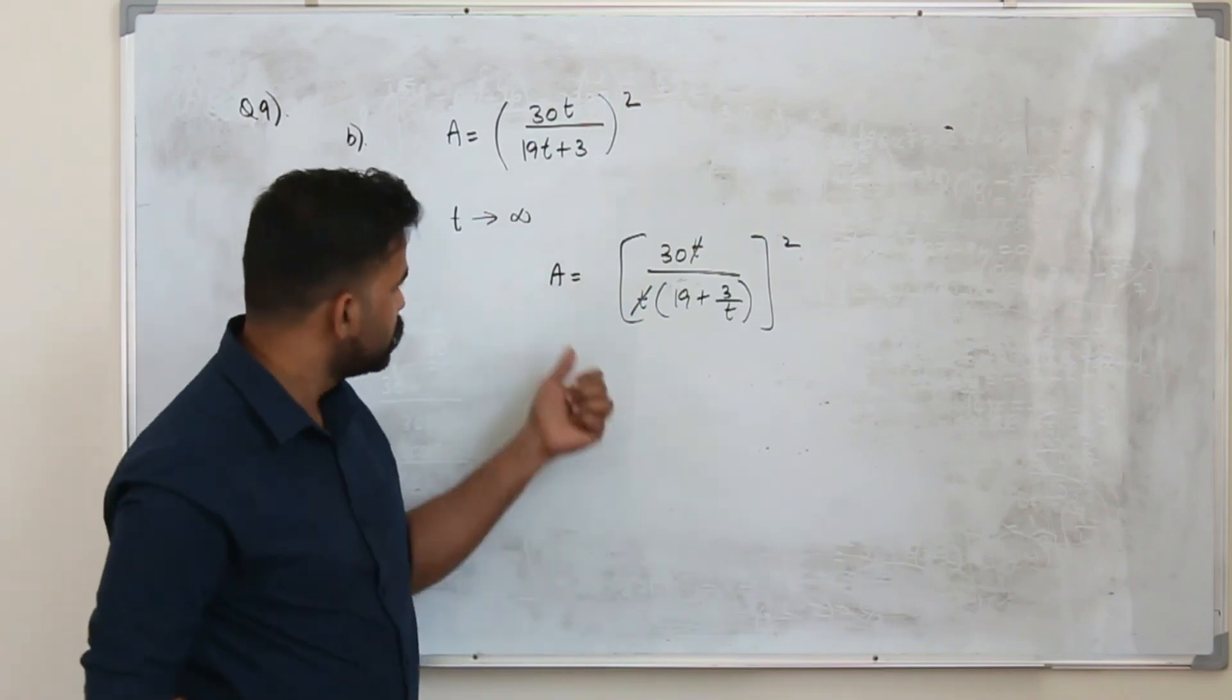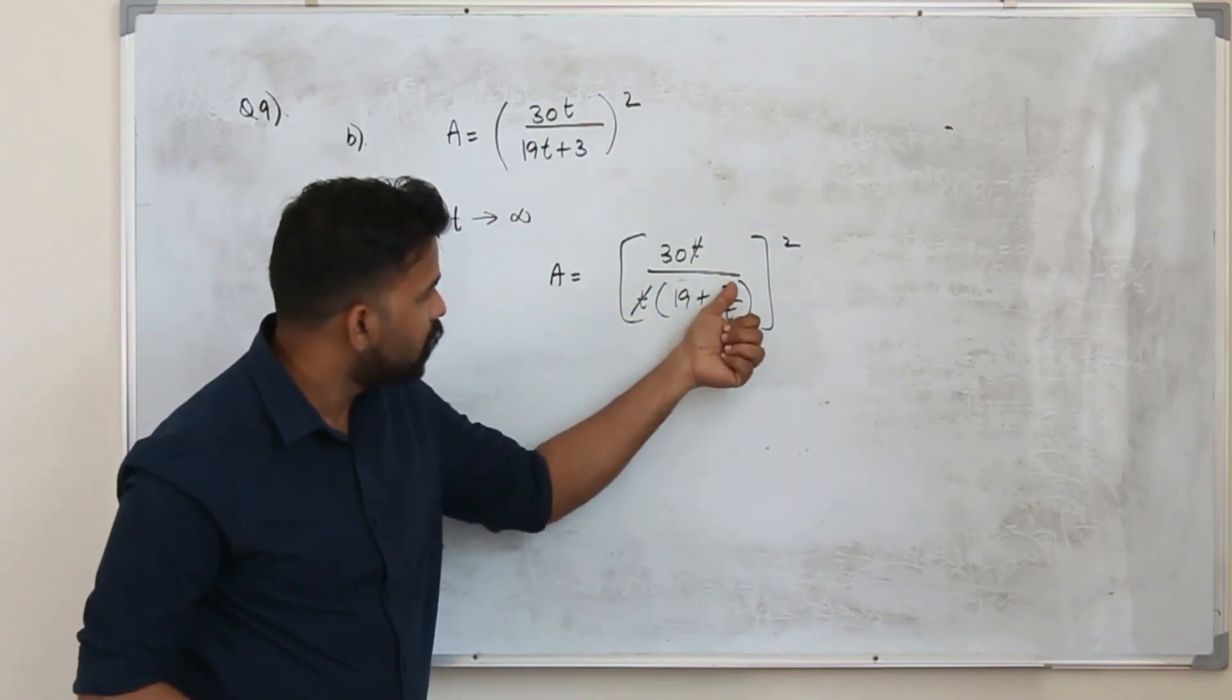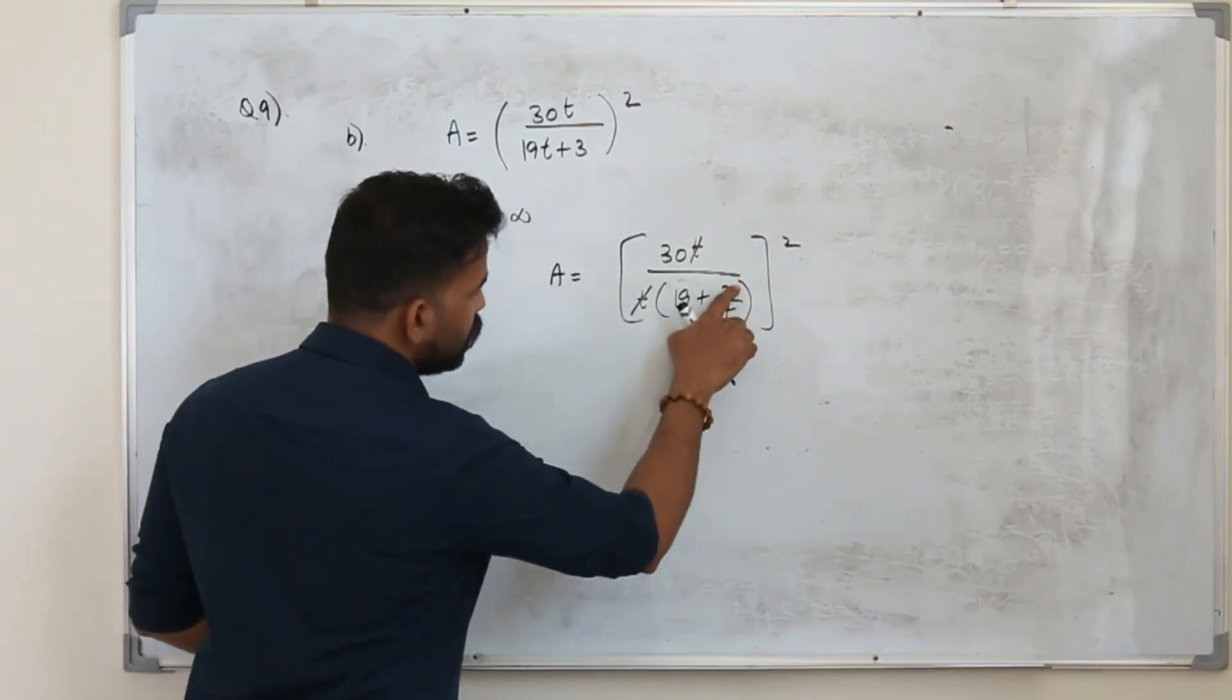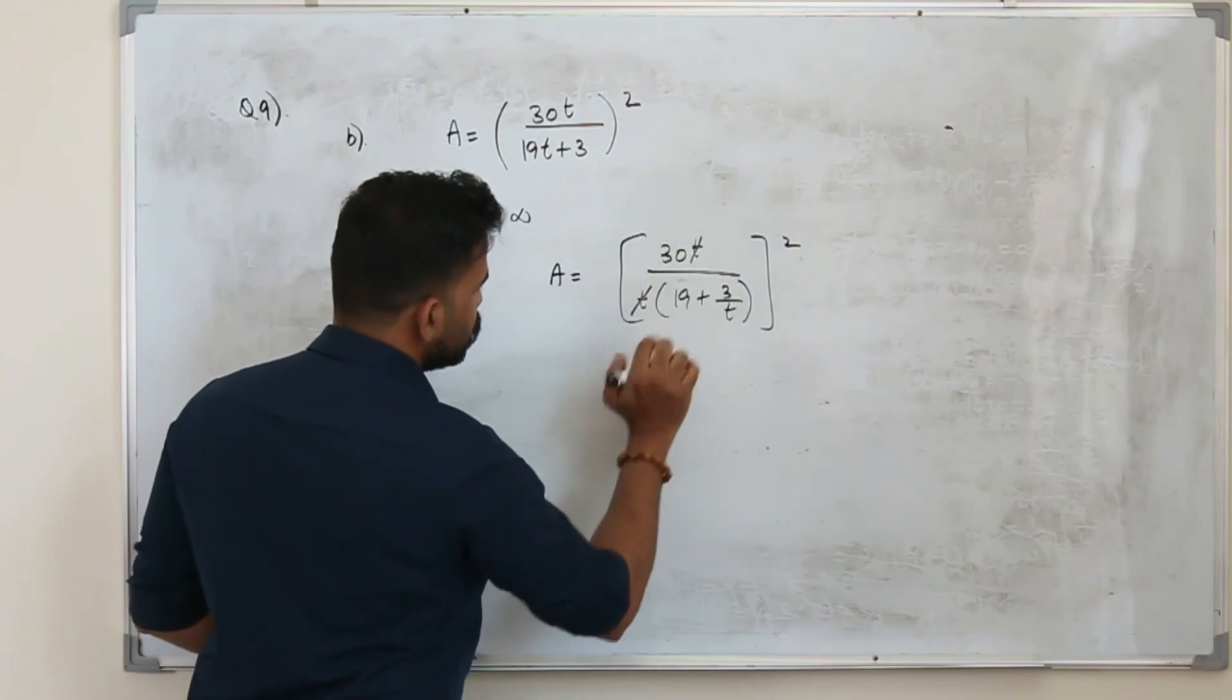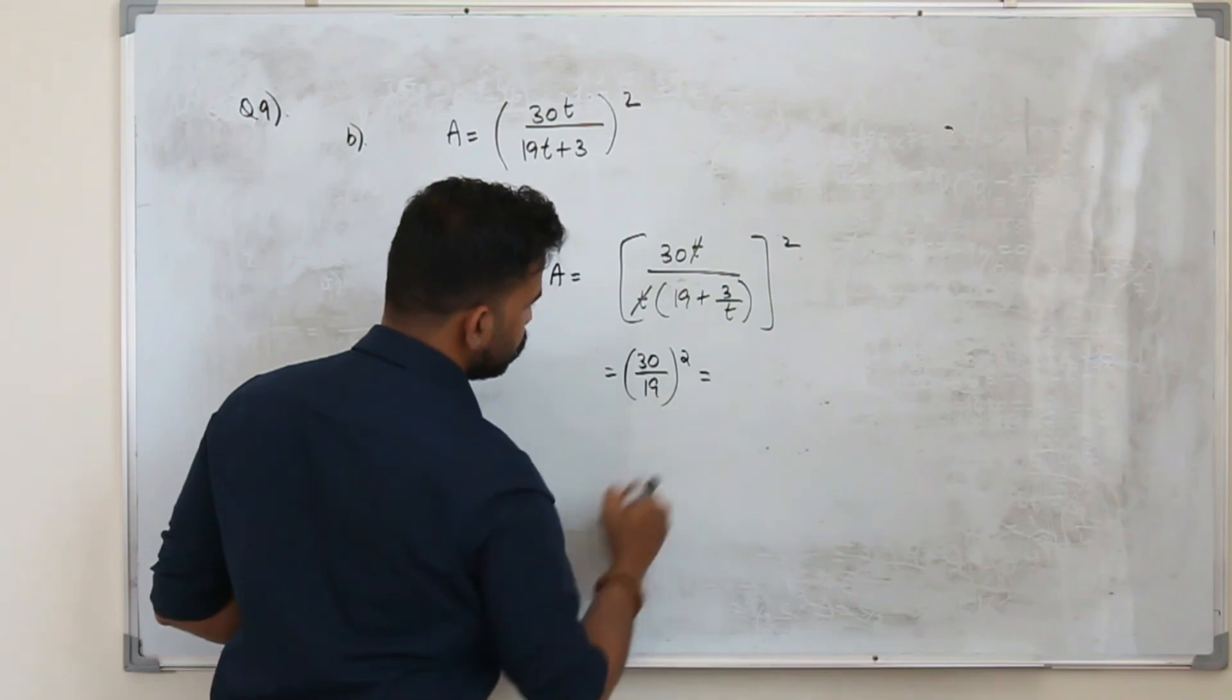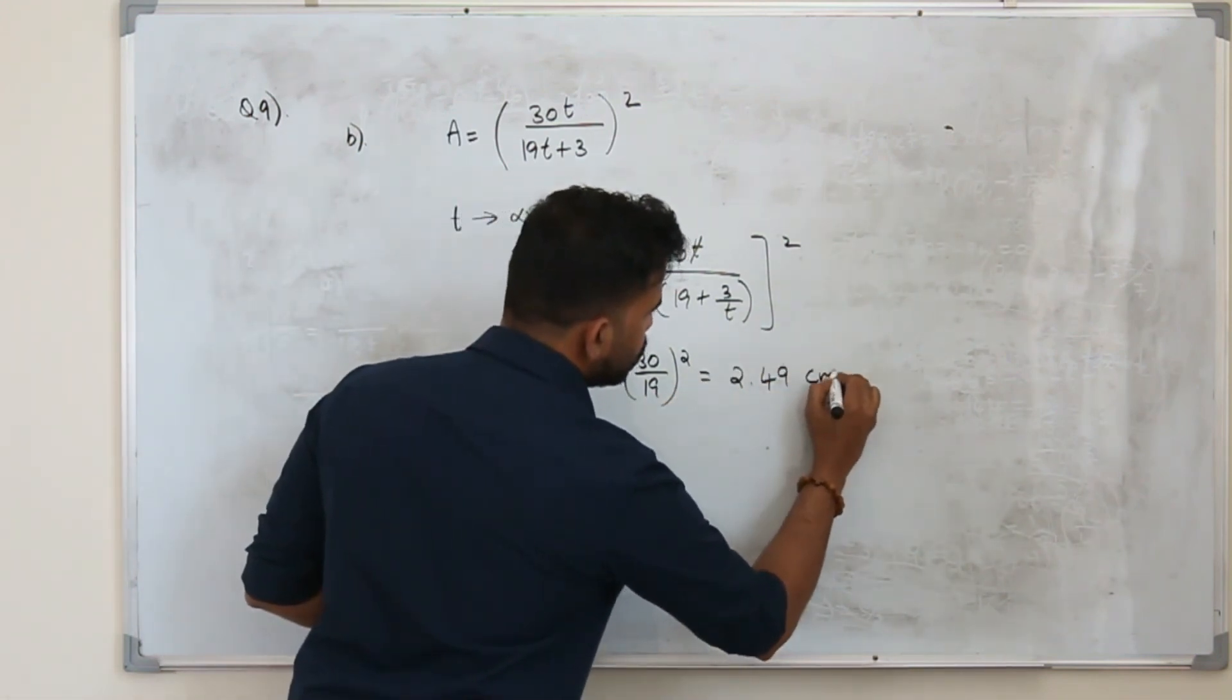Now we replace, if we replace t by infinity, 1 upon infinity is 0. So now when you substitute, 3 by infinity is 0. So you will be left with 30 upon 19 whole square, which is 2.49 centimeter square.